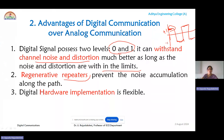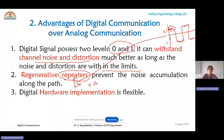In the digital communication system discussed in the first module, we saw that a number of regenerative repeaters are present throughout the channel. These repeaters consist of comparators and amplifiers. The comparator has two inputs: one is the noisy input signal and the other is a threshold value. The comparator compares the noisy digital signal with the threshold.